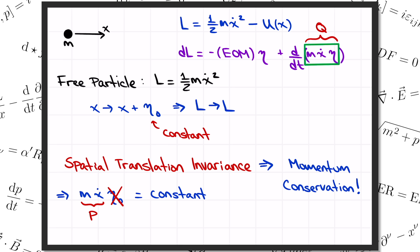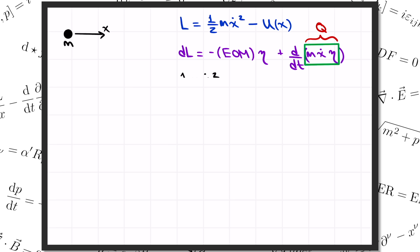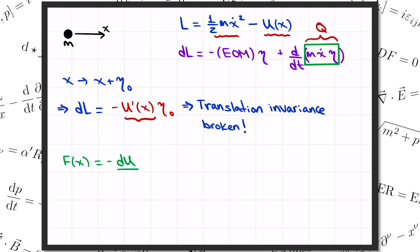But okay, a free particle isn't all that interesting. What happens when we turn on a potential u? Now, when we shift x by a constant, the Lagrangian in general won't be invariant anymore. The first term is still invariant, but from the second term, we get minus the derivative of u times eta0. And that means we only have a symmetry if u prime is equal to zero, which means the potential is a horizontal line. But that just gives us back a free particle. So we learn that translation invariance is broken if our single particle is moving in a non-trivial potential. But that's exactly what we should expect. If we turn on a potential u, that means the particle is going to be subject to a force, f equals minus the derivative of u. And Newton's second law says that the force on a particle equals the rate of change of its momentum. So the momentum isn't constant anymore because there's a force acting on the particle.